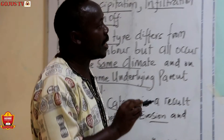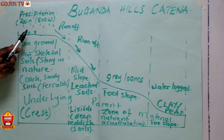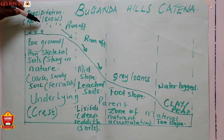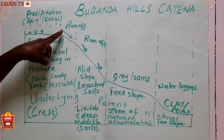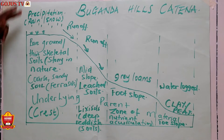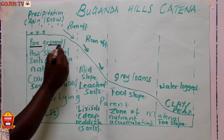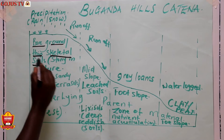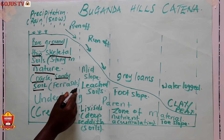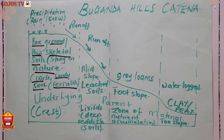Now we are going to look at our diagram. We have precipitation in the form of rain or snow. When it rains, we expect that this rainwater will infiltrate into the ground. But some of it — if the rain is too much — it may not go into the ground and will run off. On the crest of the slope, on the top of the hill, we normally find bare ground or thin skeletal soils. They are stony in nature, also coarse sandy soils, or what we call ferric soils — soils that are rich in iron and aluminium because of the process of erosion.